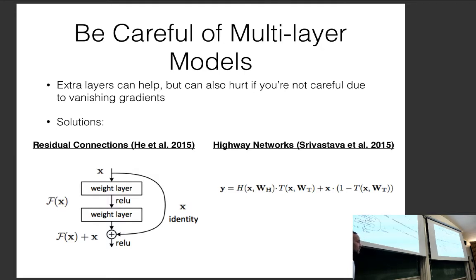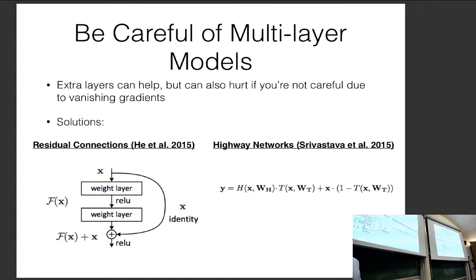A highway network works like this: you take the input, multiply by a weight matrix with a non-linearity, apply a sigmoid gate, multiply the modified input by the gate, and multiply the original input by one minus the gate. It's analogous to GRUs, which also took the previous time step multiplied by a gate and the next modified input multiplied by one minus the gate.